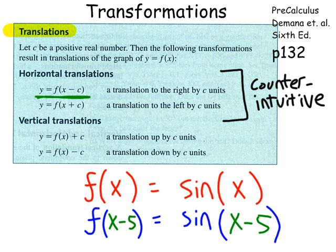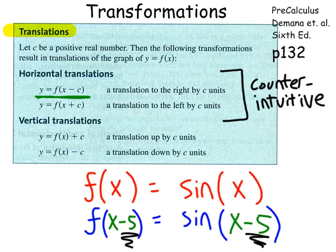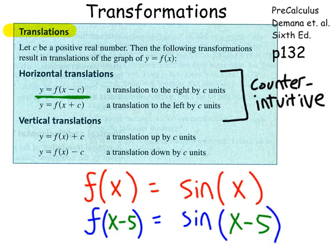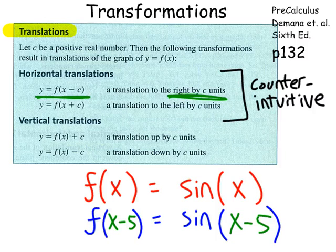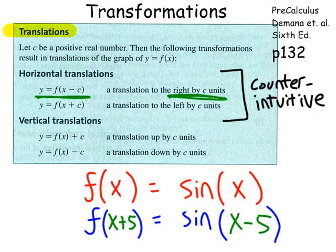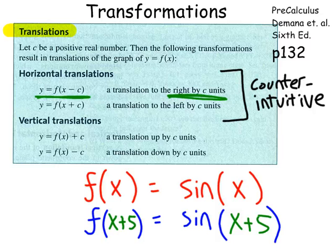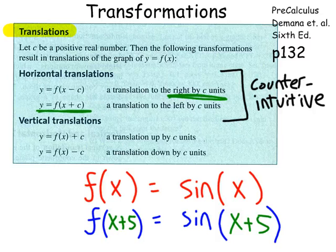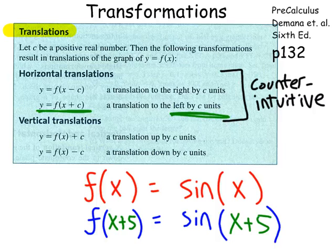Counterintuitive means counter to your intuition, opposite of your intuition. So our intuition tells us when we see a minus 5, it's natural to think, oh, minus 5, if that's left-right motion, that would be to the left. But remember, this is counterintuitive. It actually goes to the right by 5 units. If I had had an x plus 5 in both spots, our intuition thinks of plus 5 as being to the right, but again, this is counterintuitive. A plus 5 would be to the left by 5 units.